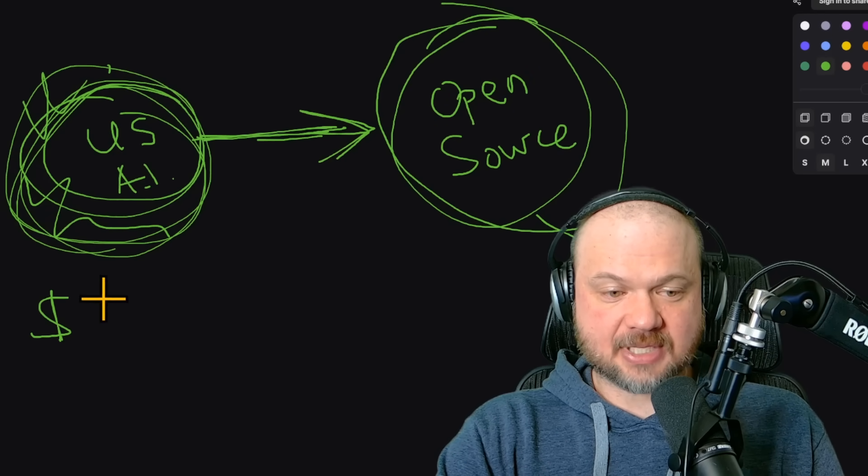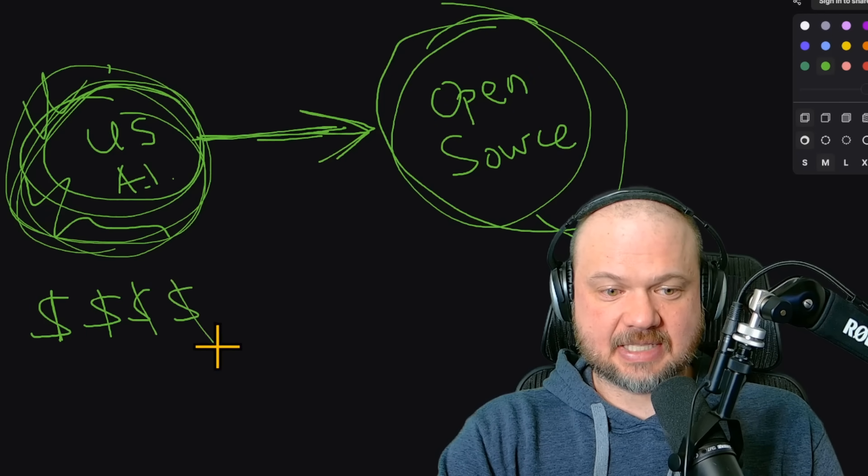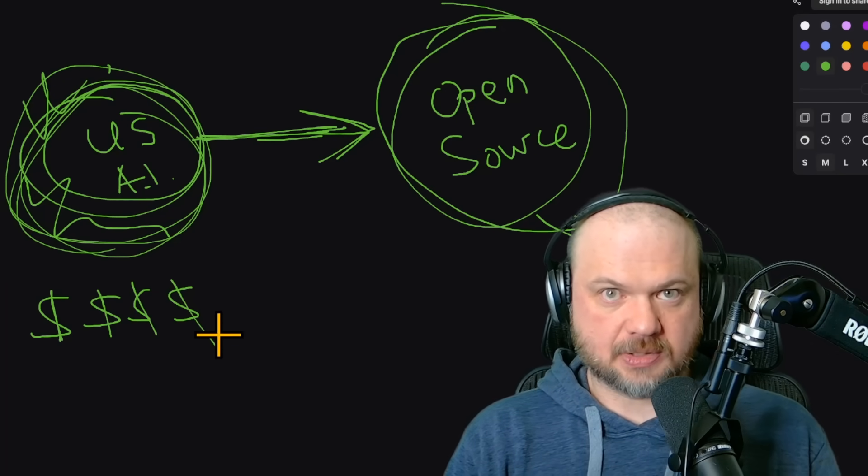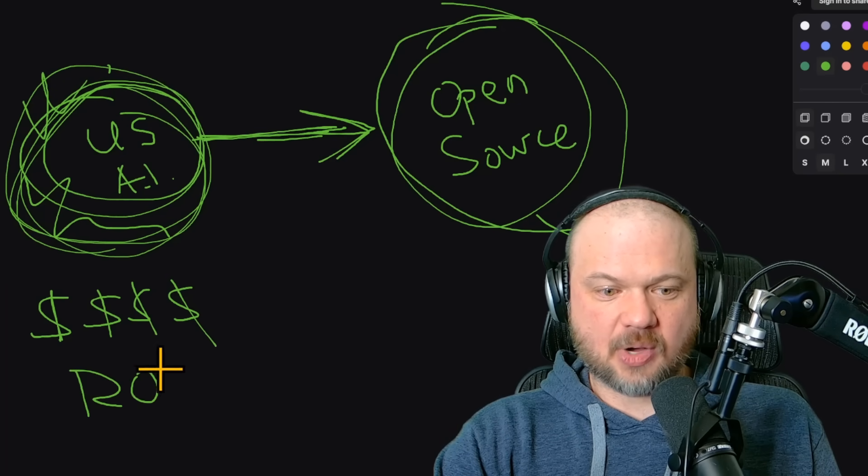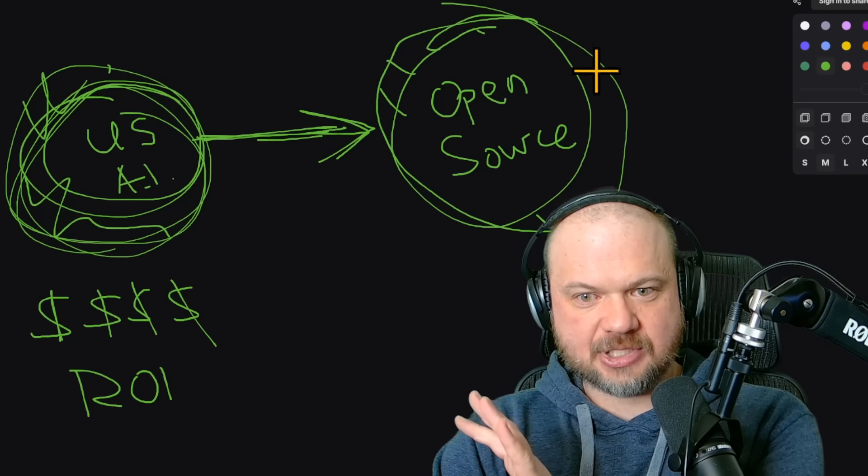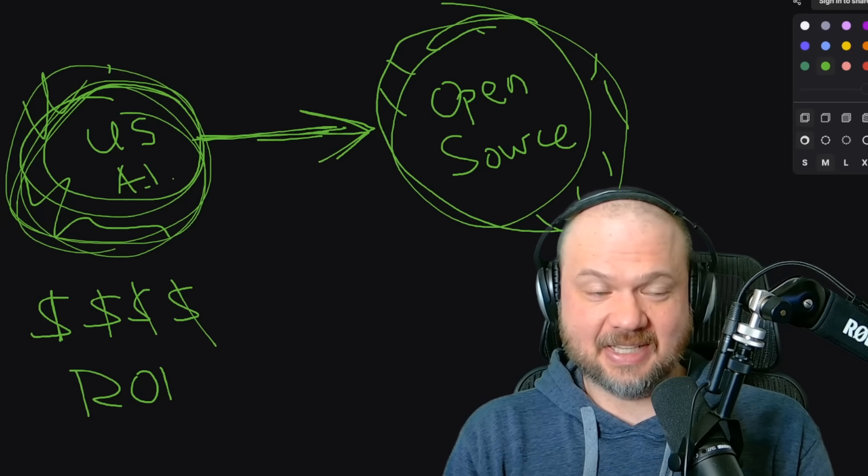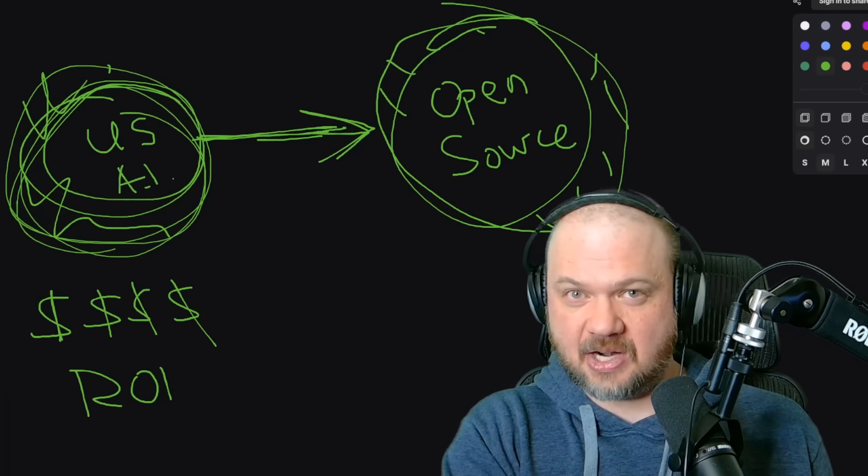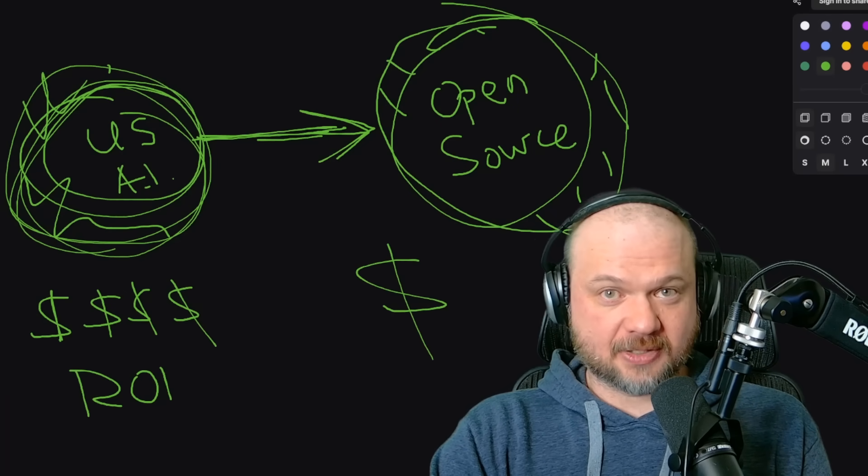So that means that the U.S. labs are spending tons and tons of money building those models, and they're hoping to get some ROI on those models, some return on their money. The Chinese labs open source something that's similar, in this case, in many ways, even better for much cheaper. How much more? Let's take a look.